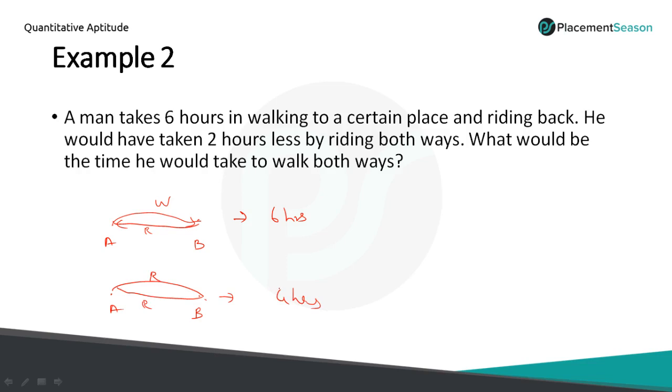What would be the time he would take to walk both ways? In this case they have given riding plus riding equals 4 hours. Here riding plus walking equals 6 hours. So our question is what is the time taken by walking plus walking.